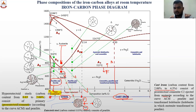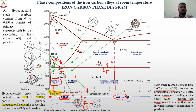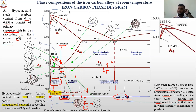We have steel and cast iron both. The region between 0% carbon and 2.06% carbon is the steel structure. Above 2.06%, we have cast iron. Cast iron contains carbon from 2.06% to 4.3%.